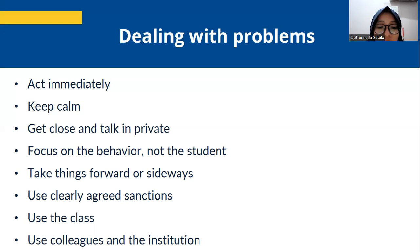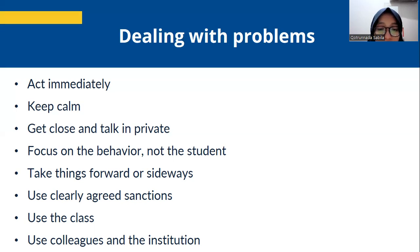And then, get close and talk in private. One way of lowering the temperature is for the teacher to approach the students so that they are close, and to discuss a student's behavior in private and talk about how to improve it. And then, focus on the behavior, not the student. We should take care not to humiliate an uncooperative student. It is the behavior that matters, not the student's character. And then, take things forward or sideways. Where a simple look or brief comment is not sufficient, we need to think carefully about how we respond. It is always better to be positive rather than negative.